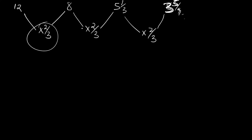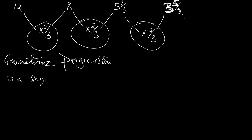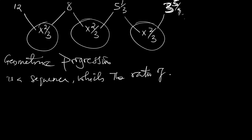So now you see there is a common feature. That means geometric progression is a sequence in which the ratio of consecutive terms is a constant.